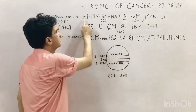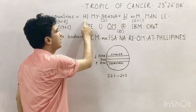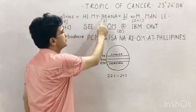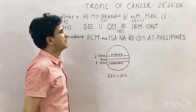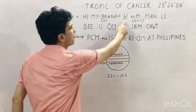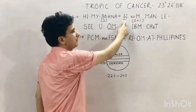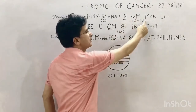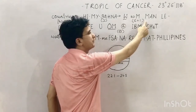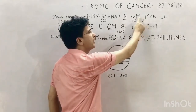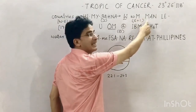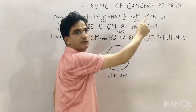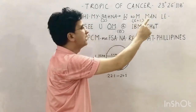Explaining the trick: Hi stands for Hawaiian Islands, M for Mexico, B for Bahamas, W for Western Sahara (disputed territory), then M for Mauritania, and the second M for Mali. Mali comes ahead of Mauritania because the third letter is L in Mali and U in Mauritania, and L comes before U in the alphabet.